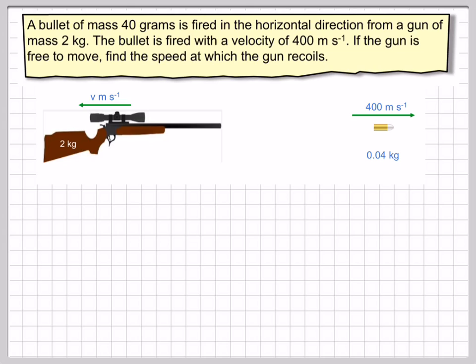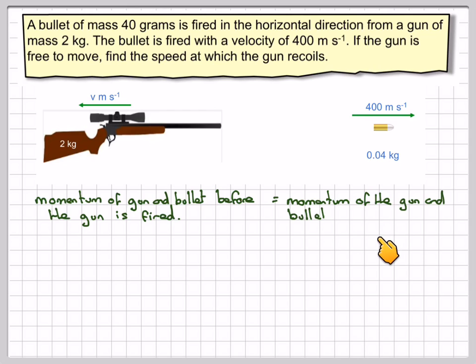So, draw a diagram. The momentum of the gun and bullet before the gun is fired has to be equal to the momentum of the gun and the bullet after the gun is fired.